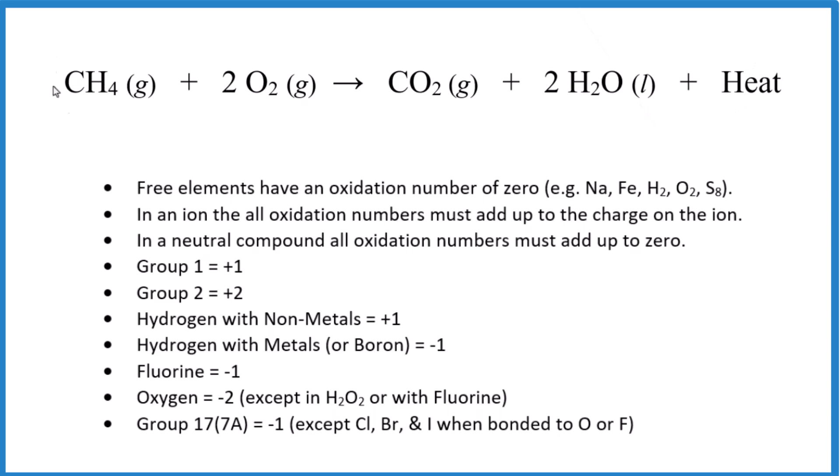So let's start with the carbon and the hydrogen here, this methane. Hydrogen is always going to be plus one when it's with a non-metal, like carbon. So each hydrogen is plus one. And what that means is since this all has to add up to zero, since it's a neutral compound, we're going to have to have a negative four here. Negative four plus four, that gives us zero, it's neutral. So those are the oxidation states for the carbon and the hydrogen.